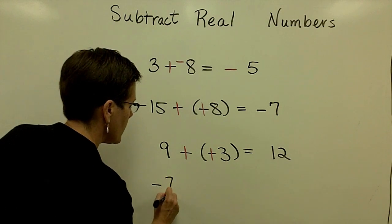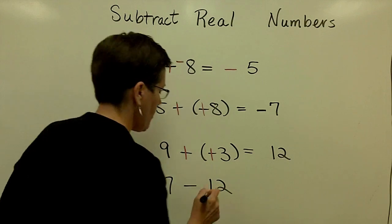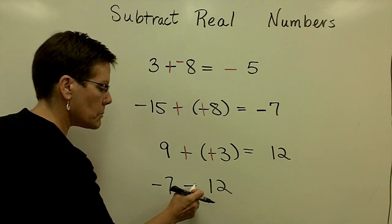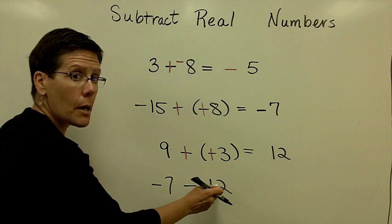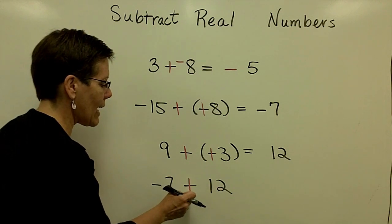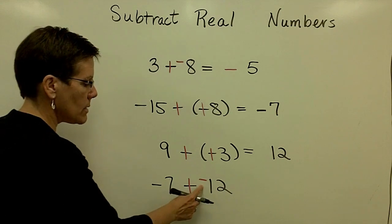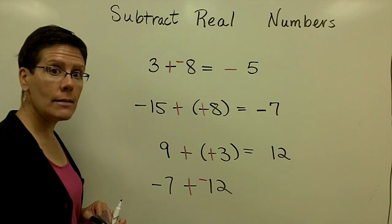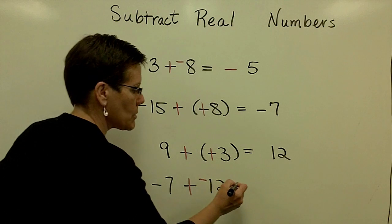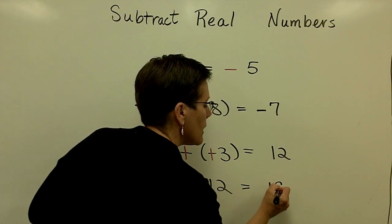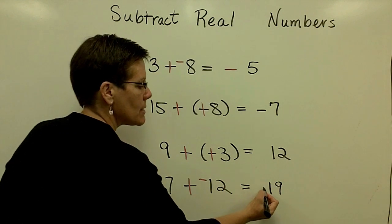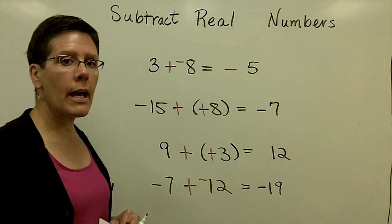A negative 7 minus 12. A negative 7, this is a subtraction symbol. I will subtract a positive 12, so I'm going to add a negative 12. And then because these two values have like signs, I will add their absolute value, that is 19, and I'll give my answer the common sign that they share, which is a negative sign.